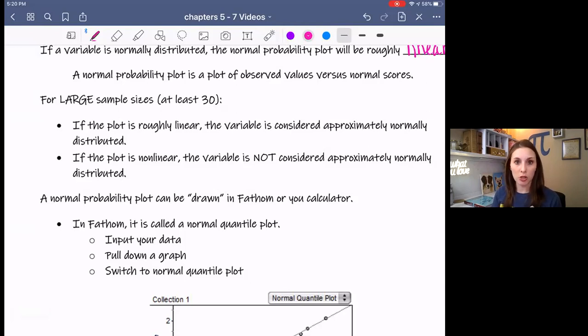So there's several ways that you can draw a normal probability plot or construct one I should say. Obviously you can do one by hand and I am going to show an example of that. You can also do it in Fathom really easily. So if you've downloaded Fathom onto your computer and I have a picture down here of what that looks like, or you can use your calculator. So there's three different ways you can do it and I will show you all of them.